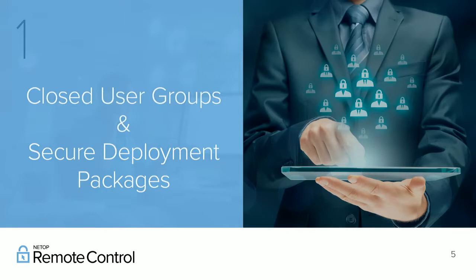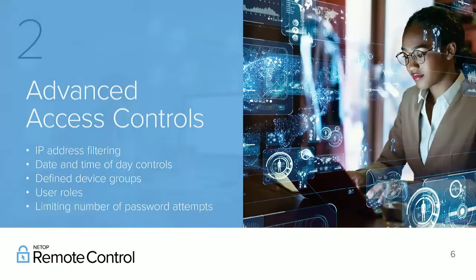If you're not using a cloud-based subscription solution but instead a perpetually licensed software over a LAN or WAN, you need a similar requirement. Rather than devices checking in with a central account service, make sure they are part of a closed user group where the software verifies that both endpoints belong to the same group and are authorized to connect. This dramatically reduces the chances of someone downloading the software and impersonating one of your users.